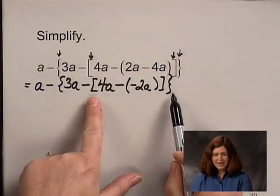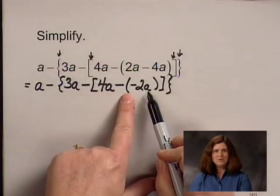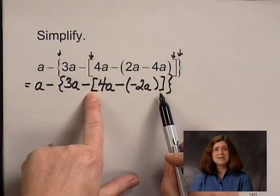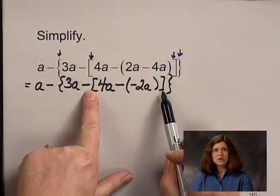I will now work with my next set of grouping symbols. I have parentheses around negative 2A, but that's a simplified form. I can now work with the next set of grouping symbols, which are the brackets.